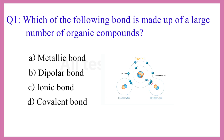Question No. 1. Which of the following bond is made of a large number of organic compounds? The correct answer is option D. Covalent bond.